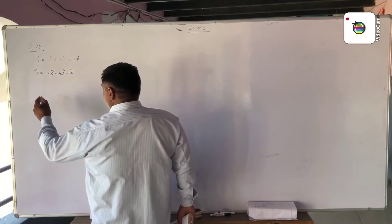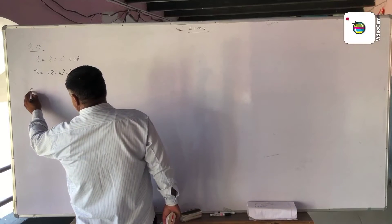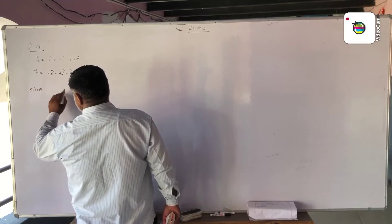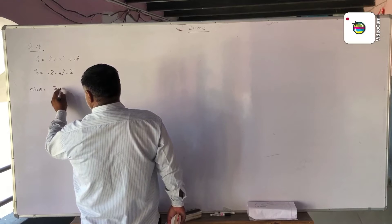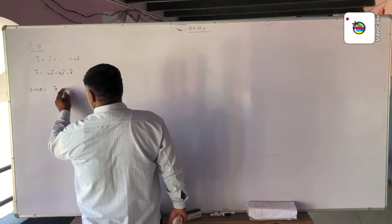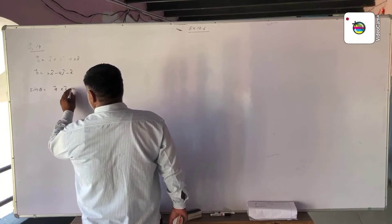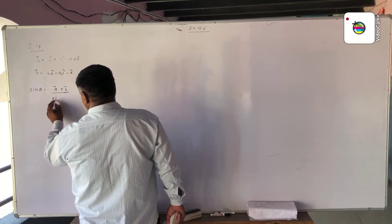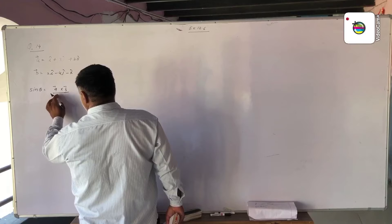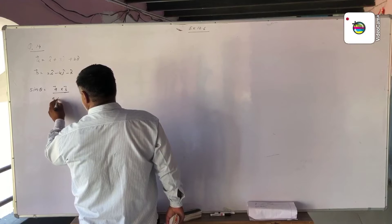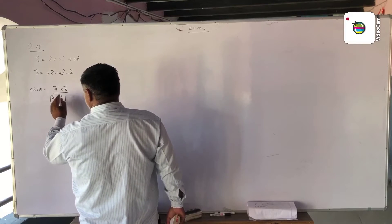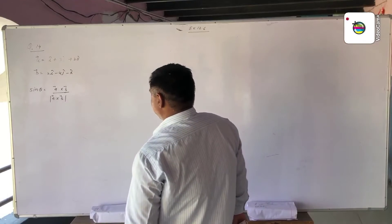Sine theta is equal to the magnitude of vector A cross vector B divided by the product of the magnitudes of A and B. This is the formula for the sine of the angle between two vectors.